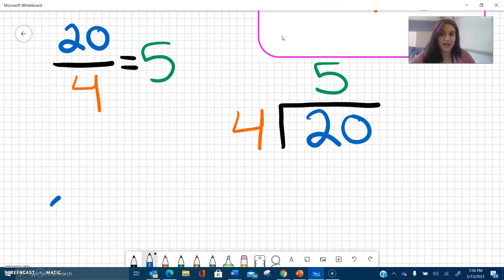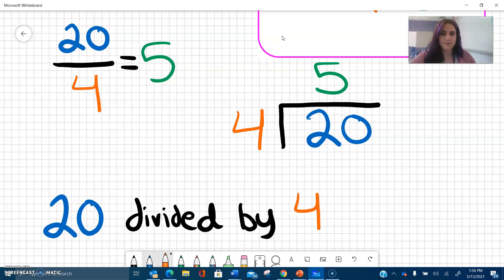So for all of these, we say 20 divided by 4. And you can say is or equals, is or equals, is or equals 5.